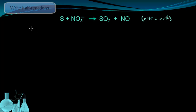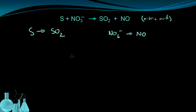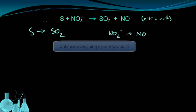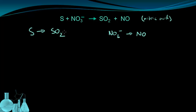The nice thing about getting incomplete reactions like this is that it's frequently pretty easy to isolate the half-reactions. Our two half-reactions are: sulfur becomes SO₂, and the nitrate ion becomes nitrogen monoxide. Now that the half-reactions are written, the next step is to always balance them in terms of atoms.